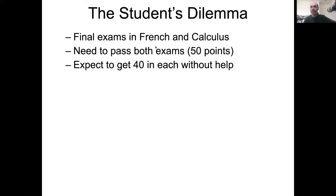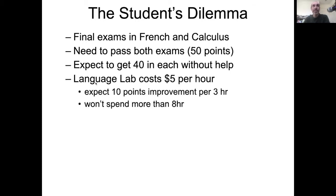So imagine you have finals in French and calculus, and you need 50 more points in both classes to pass. You expect to get 40 without additional help. So the question is, how do you get that additional help, and what are the trade-offs involved? For French, there's a language lab you can go to that costs $5 an hour, and you expect to get 10 points of improvement per three hours of studying. But you have a mental capacity, and you know you won't spend more than eight hours studying French before you stop seeing improvement.